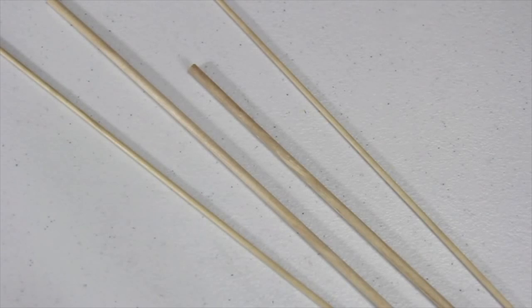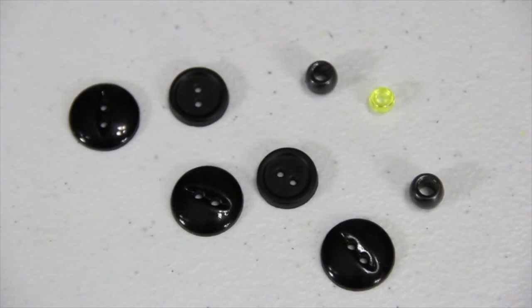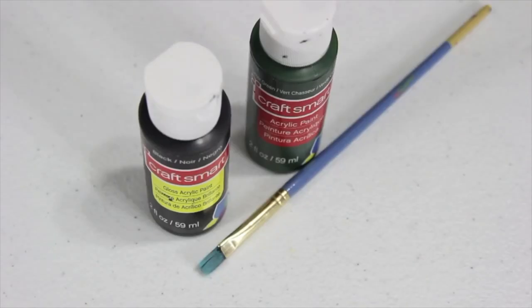I am going to make a fly fishing rod for a doll using thin wooden dowels, thread, buttons and beads, jump rings, feathers, glue, and craft paint.